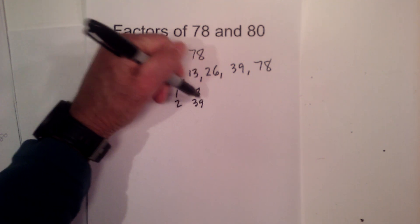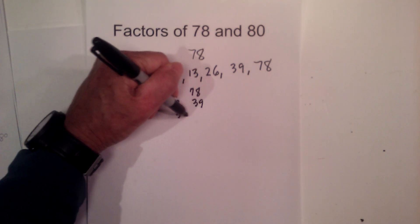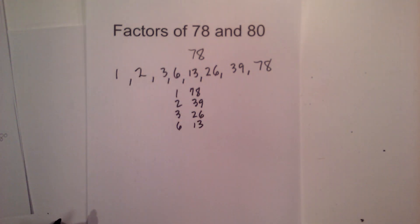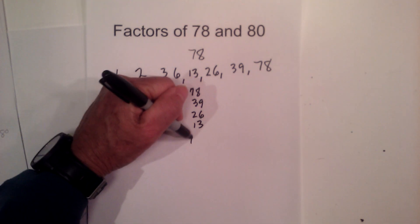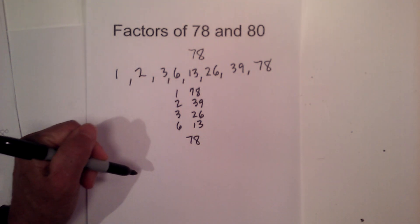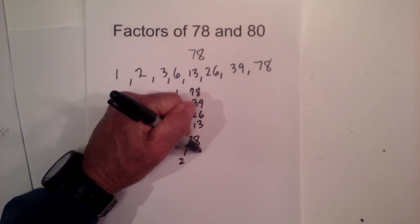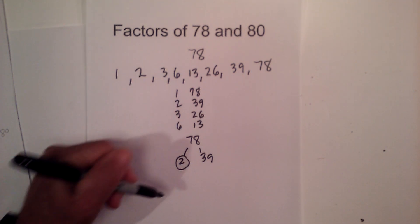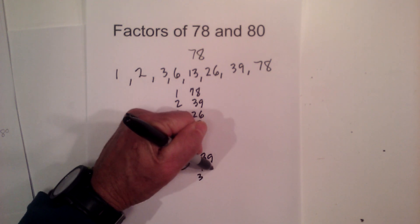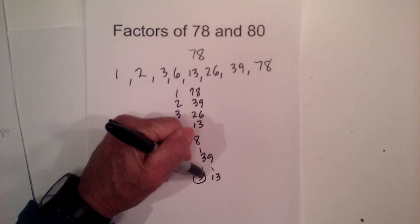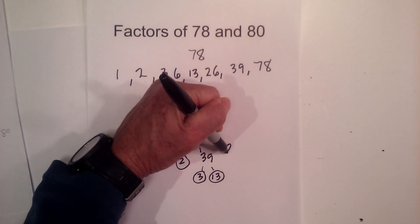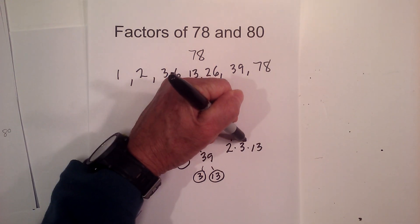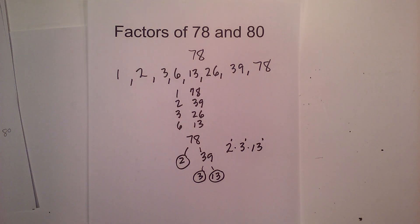Now to complete a factor tree for prime factorization, we have 2 times 39 — circle the 2 because it is prime — and then 3 times 13, which are both prime. So the prime factors are 2, 3, and 13, all to the first power. Now let's look at 80.